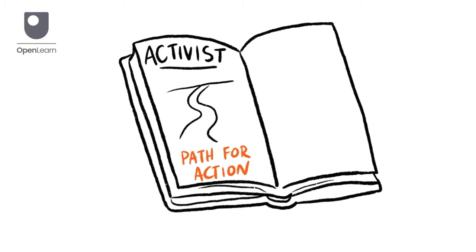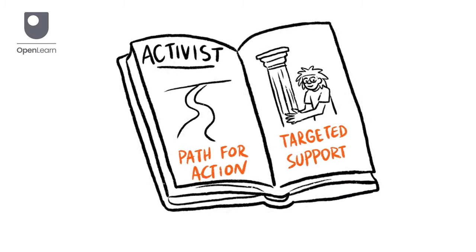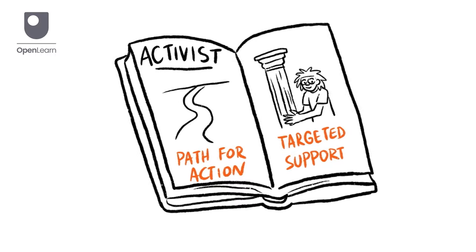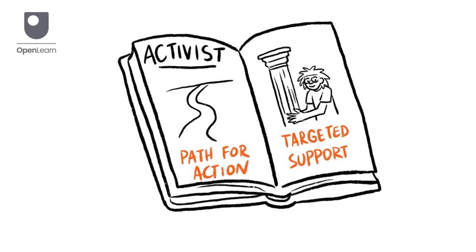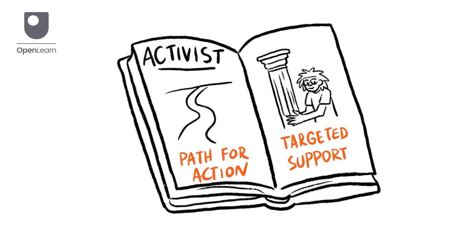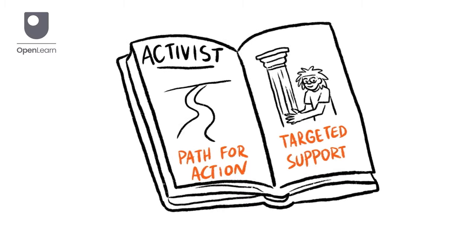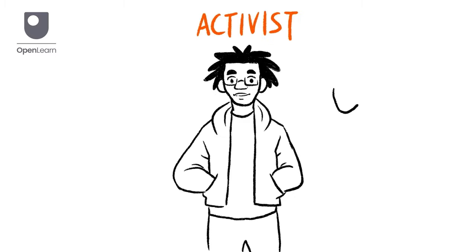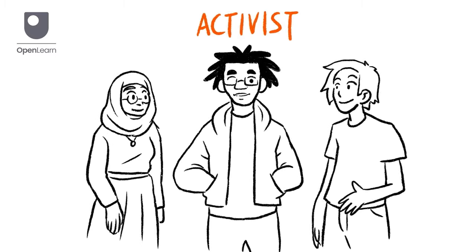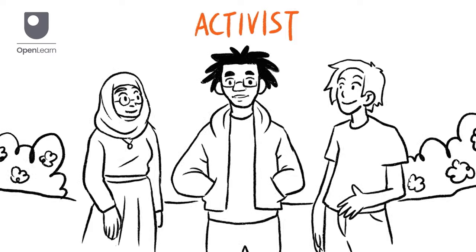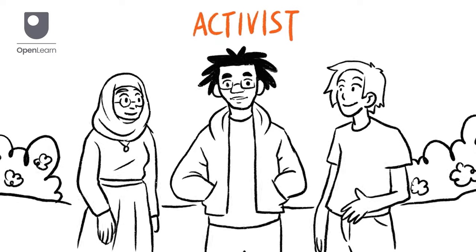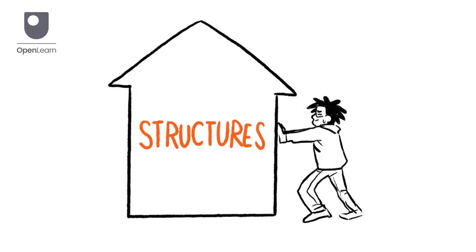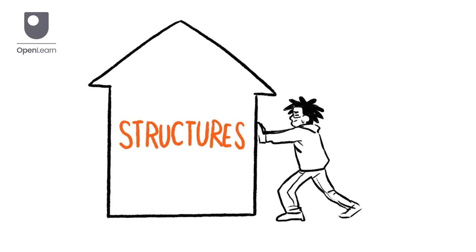The activist is someone who takes the initiative to create a path for action. They often provide targeted support to energise the process at a critical moment. For instance, they might help to engage a certain group or prototype an idea, and to set up practices and structures that can be used again in the future.